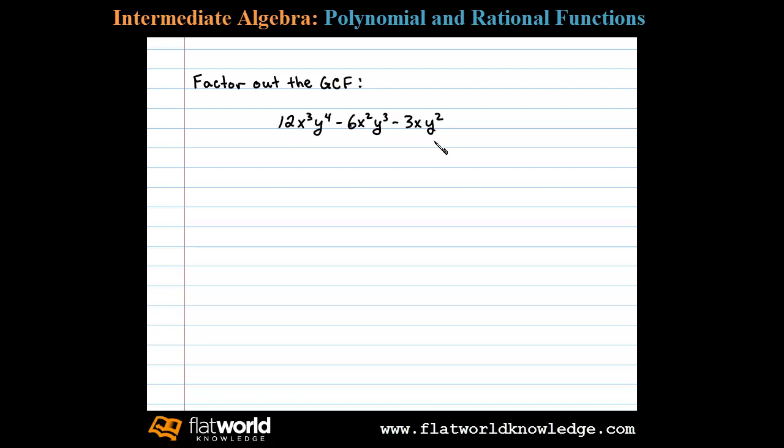Here we're asked to factor out the GCF. Let's begin by determining the GCF, or the greatest common factor, of all the coefficients. In this case we have 3, 6, and 12. It should be clear that the GCF is 3.